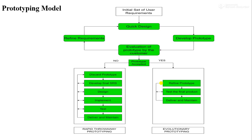This is the diagrammatic representation of the prototyping model. First, we collect user requirements, then perform a quick design. After the quick design, we develop a prototype and give it to the client for evaluation. If the client finds the prototype is performing all functions mentioned in the requirements document, they accept it; otherwise they reject it. If rejected, we refine the requirements, perform quick design again, develop a new prototype, and re-evaluate. If the client accepts, only then do we develop the actual product.